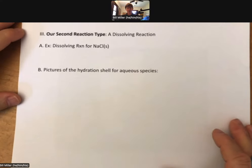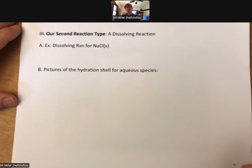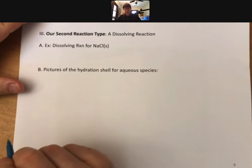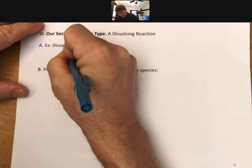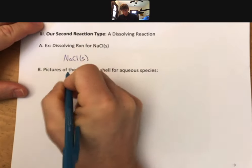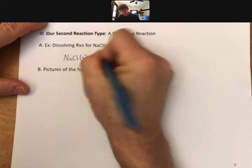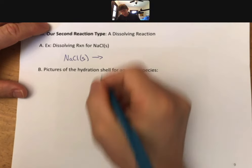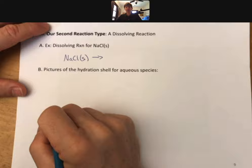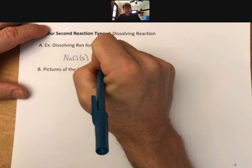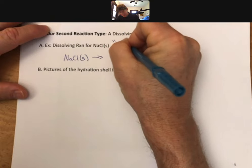Our second reaction type is a dissolving reaction. A dissolving reaction for sodium chloride solid looks like this. Take whatever it is that is dissolving and break it up, or make it aqueous. This time make it aqueous.